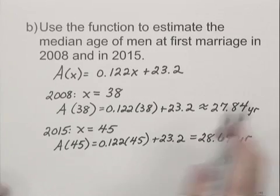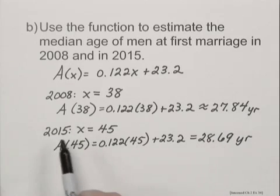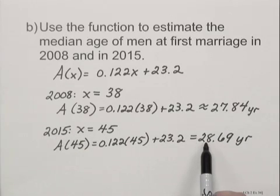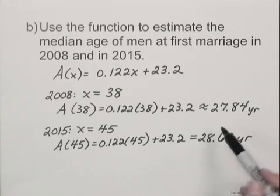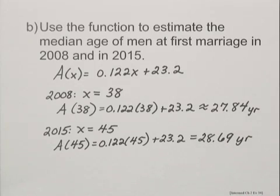So the median age in 2008 is 27.84 years, in 2015 28.69 years. And notice that they are continuing to rise, which is what we saw when we looked at the data.